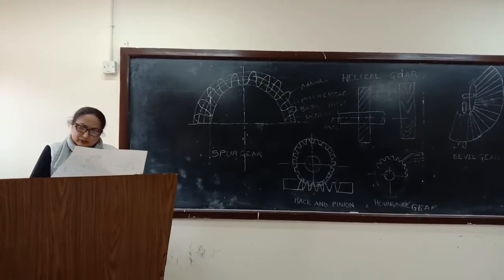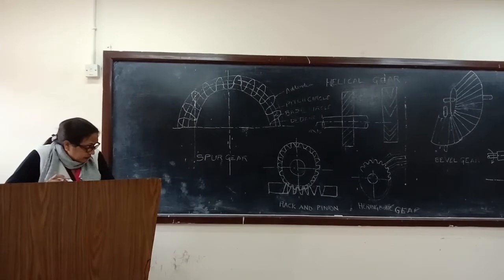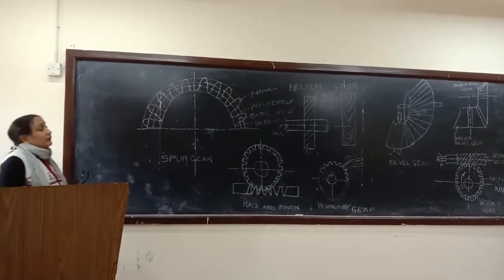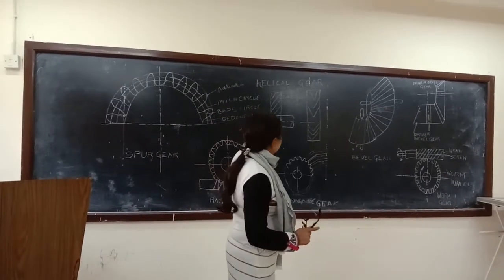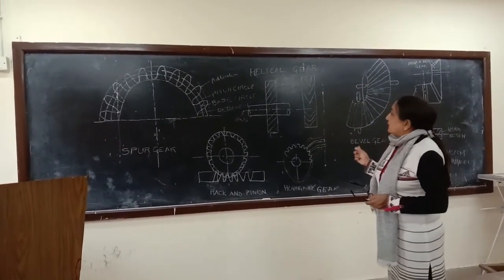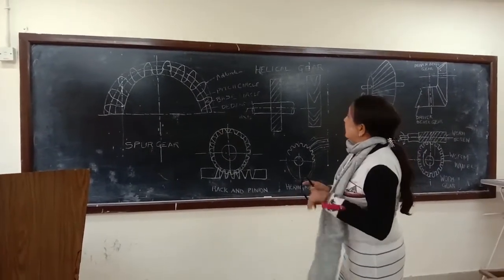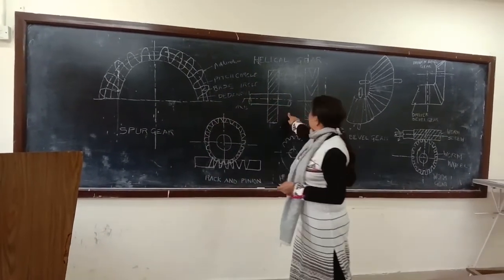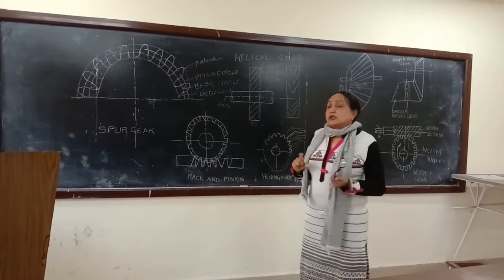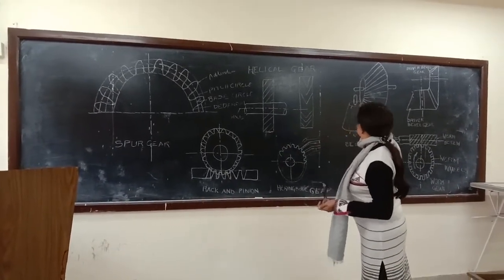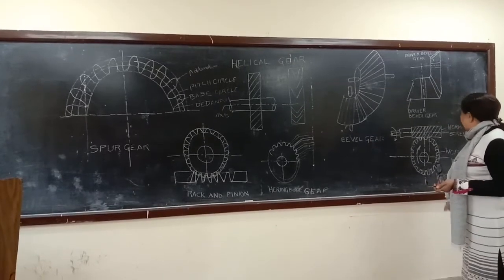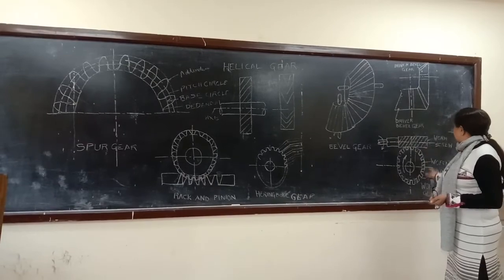These are the gears you have to design in your files. The diagram made on the board should be made the same in your files. For each gear type, write the advantages and disadvantages. For example, spur gear is noisy. Helical gears are less noisy because the teeth are inclined. Bevel gear has the shape of a spider cone.